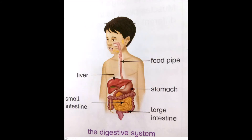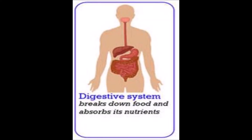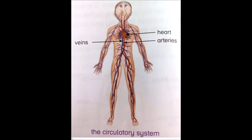Moving to the next topic: the digestive system. The digestive system starts from our mouth and ends at the anus. It is about a 10-meter long tube. It includes the food pipe, stomach, small intestine, large intestine, liver, and rectum. Food is turned into small pieces that are digestible into the blood in the digestive system.